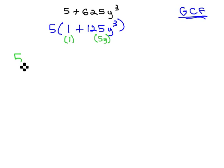Now, with the GCF out front, the cubes formula starts with a binomial and then a trinomial factor. The binomial, we just plug the roots in that we just found, 1 and 5y.